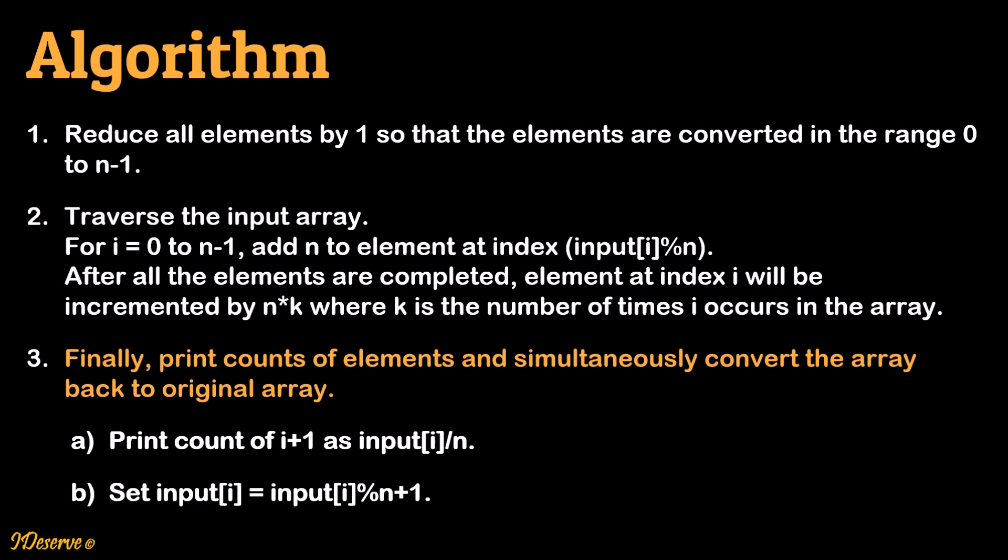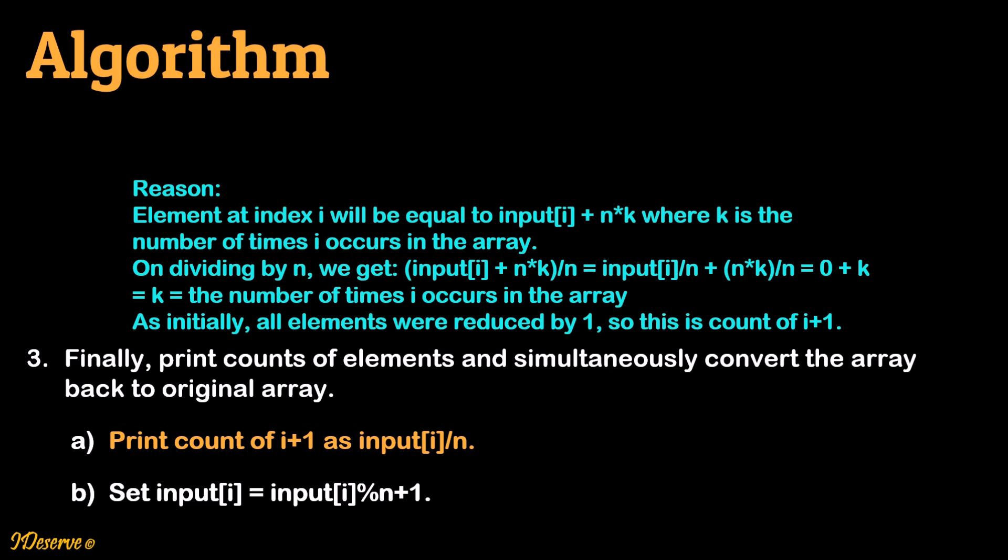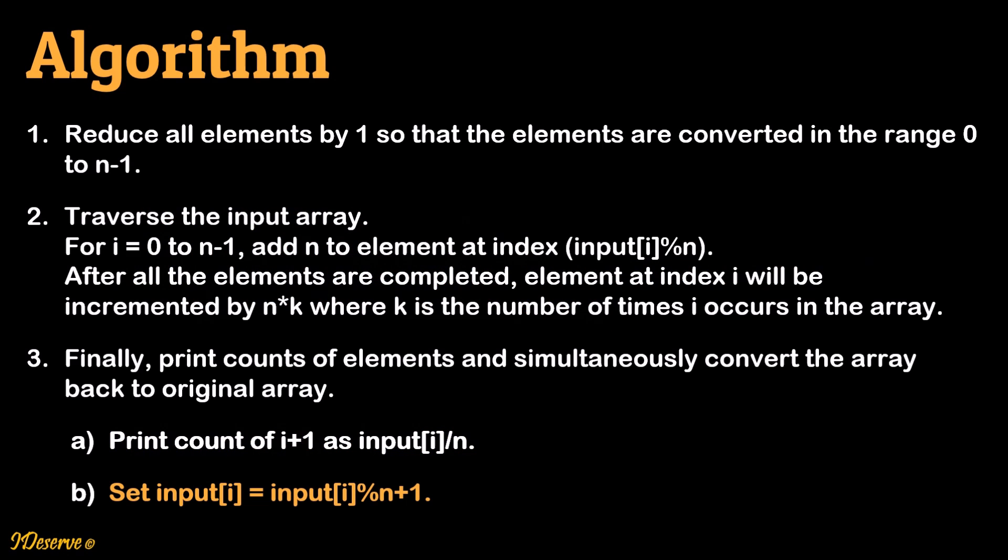Finally, we print counts of elements and simultaneously convert the array back to the original. Print count of i plus 1 as input[i] divided by n. The reason is: element at index i equals input[i] plus n*k, where k is the number of times i occurs. On dividing by n, we get k. Since initially all elements were reduced by 1, this is the count of i plus 1. Then set input[i] as input[i] mod n plus 1 to restore each element, since we reduced all elements by 1 in the first step.